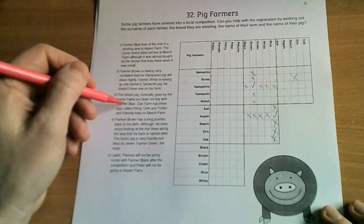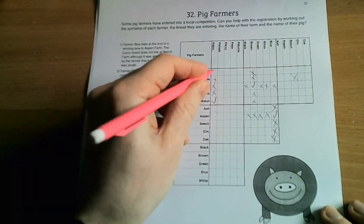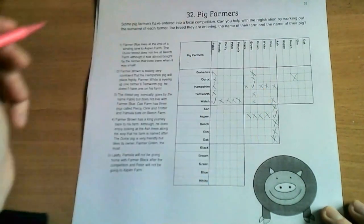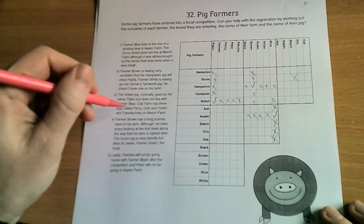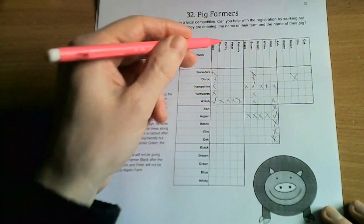And then we have the Welsh pig, ironically goes by the name Pablo but does not live with Farmer Blue. Oak Farm has three pigs called Percy, Oink, and Trotter, so Percy, here's Oak Farm.